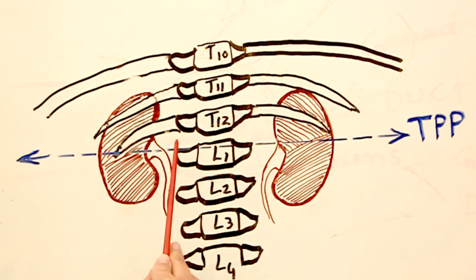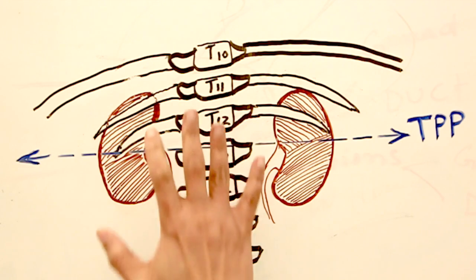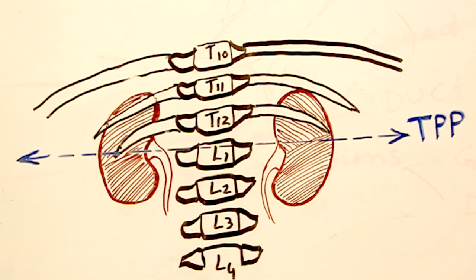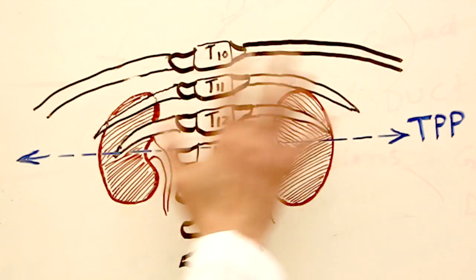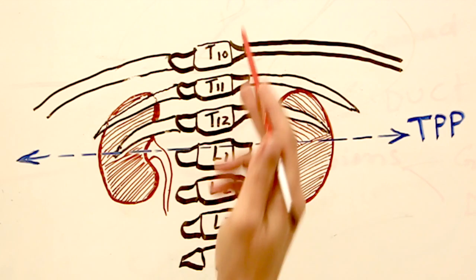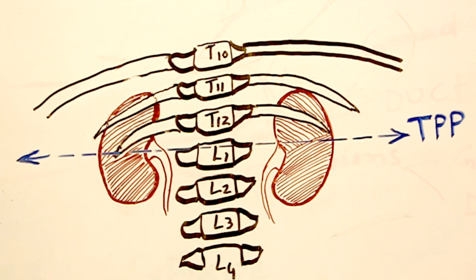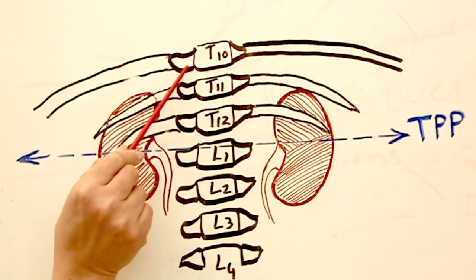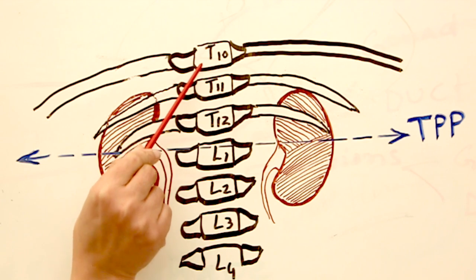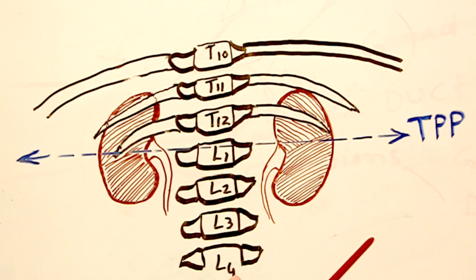This is showing us the posterior or dorsal aspect of the vertebral column that includes the ribcage in the thoracic region. Here you can see the 10th rib, the 10th pair of ribs attached to the 10th thoracic vertebra. By the way, this is the back of the thoracic and lumbar vertebrae.